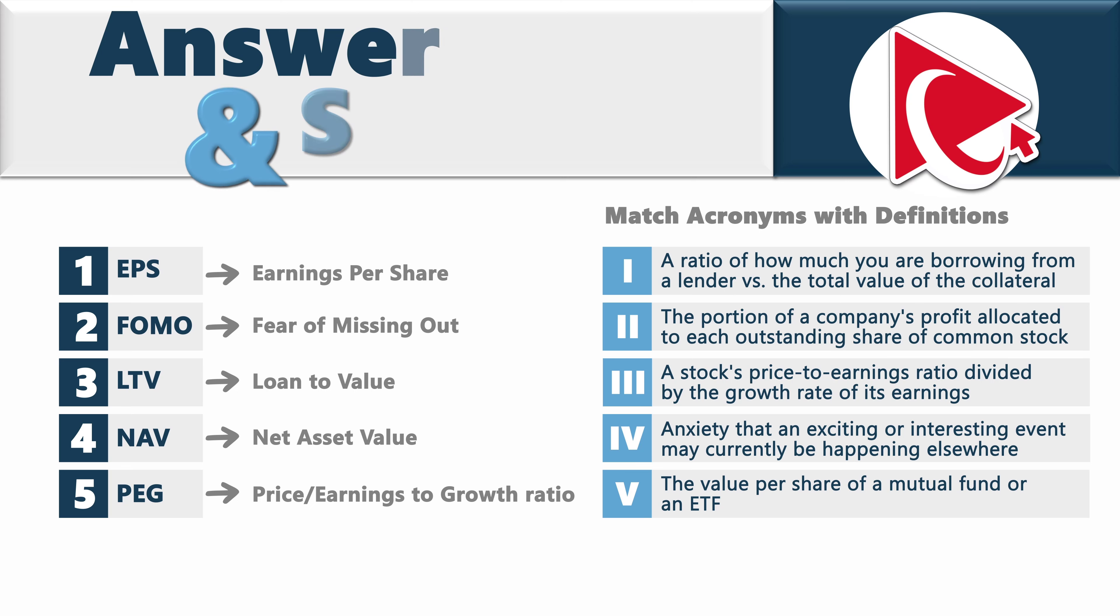Knowing the acronyms, we can look at the financial terms definitions now. Earnings Per Share represents the portion of the company's profit allocated to each outstanding share of the common stock. Fear of missing out is an anxiety that an existing or interesting event may currently be happening elsewhere, often aroused by the posts seen on social media. Loan to Value represents a ratio of how much you are borrowing from the lender versus the total value of the collateral. Net Asset Value represents the value per share of the mutual fund or an ETF. And last but not least, Price to Earnings to Growth Ratio represents the stock's Price to Earning Ratio divided by the growth rate of its earnings.